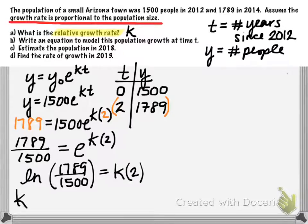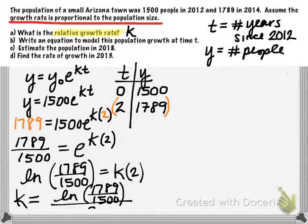So k, the relative growth rate, will be the natural log of 1789 divided by 1,500, that whole quantity divided by 2. Now you have two options. We don't want to round this number in any of our future computations. So you can either leave it like this in its exact form, or you can go ahead and plug that into your calculator.